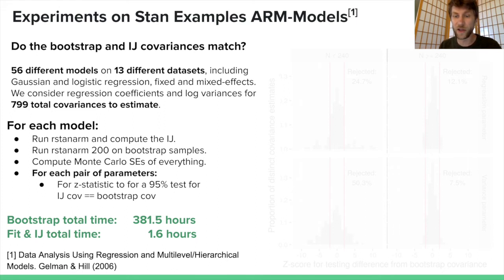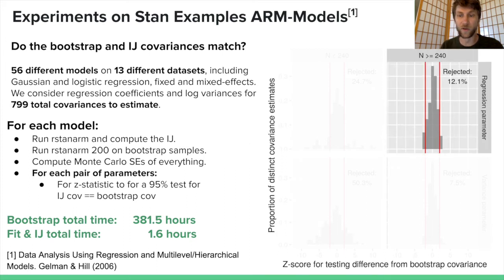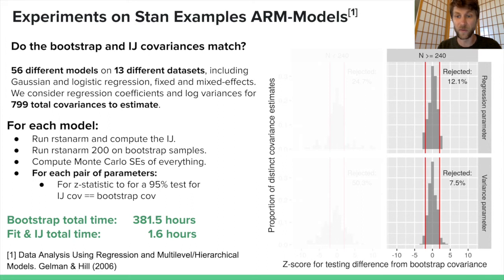Let's look at how we did. For models with relatively large data sets, where large means greater than the fairly arbitrary cutoff of 240 data points, and regression parameters, it looks pretty good. This is the histogram of the z scores. The red bars show the rejection regions for our 95% test of equality between the IJ and the bootstrap covariances. If it were perfect, we would have rejected 5% of these. We, in fact, rejected 12.1, so they're not exact, but it's a pretty good proxy. For the covariances that involved at least one variance parameter, we do similarly well.